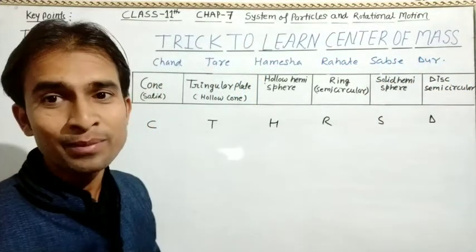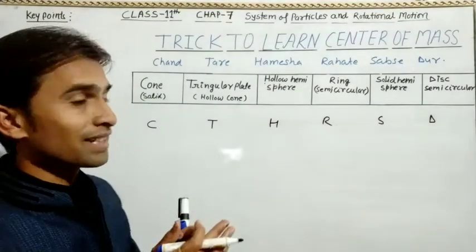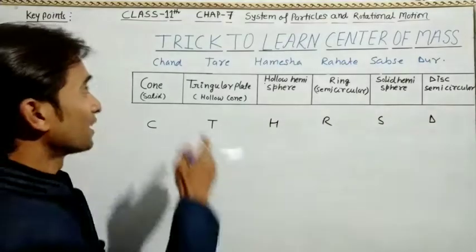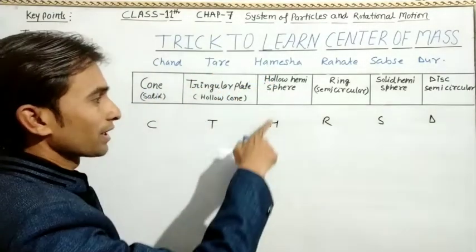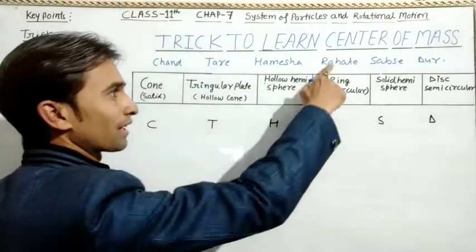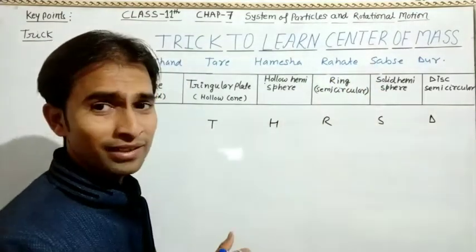So this is how you understand it and feel it. The Chand Tare is always far away. So this is solid cone, this is triangular plate, this is hollow hemisphere, this is ring, S for solid hemisphere and D for disk.